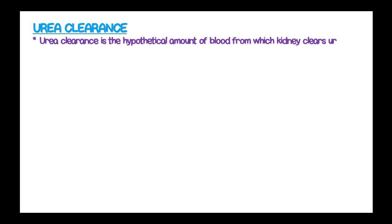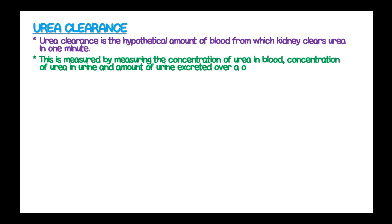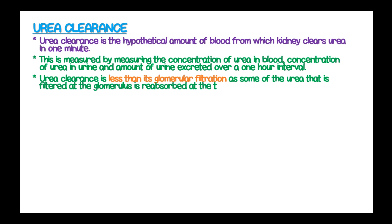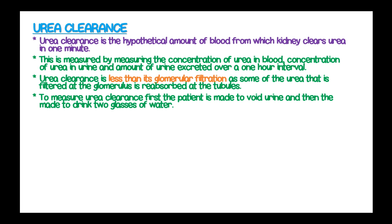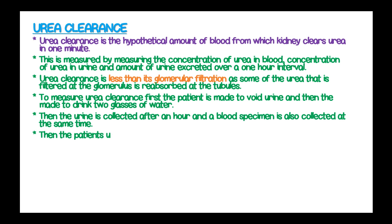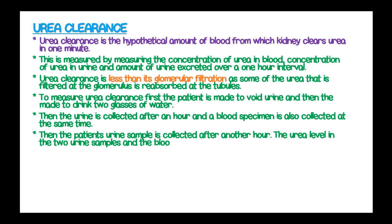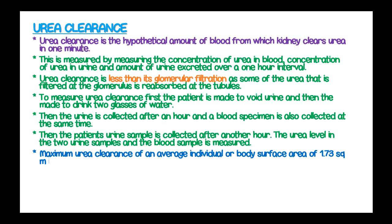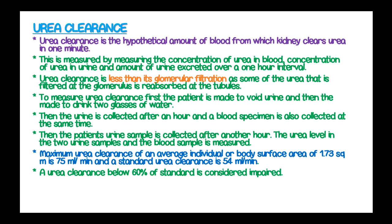Urea clearance is the hypothetical amount of blood from which the kidney clears urea in one minute. It is measured by measuring the concentration of urea in blood, concentration of urea in urine, and the amount of urine excreted over one hour. Urea clearance is less than its glomerular filtration rate, as some of the urea filtered at the glomerulus is reabsorbed at the tubules. To measure urea clearance, the patient voids urine and drinks two glasses of water. Urine is collected after one hour and blood is collected simultaneously. Maximum urea clearance for an average individual with a body surface of 1.73 m² is 75 ml per minute, and standard urea clearance is 54 ml per minute. A urea clearance below 60% of standard is considered impaired.